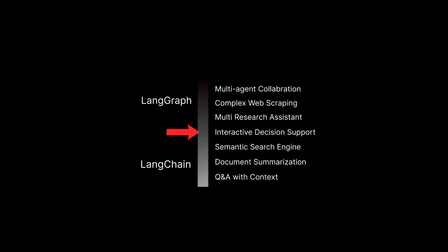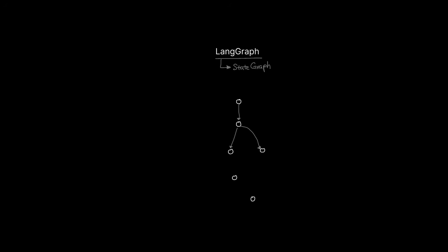One way to look at it is the threshold for changing from LangChain to LangGraph really comes down to a component called state graph. Essentially, when you use state graph, you have the ability to add what's called nodes and edges. A node is an individual unit of computation — think of a function that you can call. An edge is a transition between these nodes that can either pass through or be conditional.